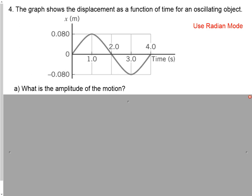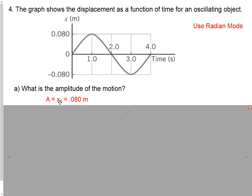We're going to start with an example putting to use some of the things we learned last time. Here we can see an object where its displacement has been graphed as a function of time. Remember, you need your calculator to be in radian mode for this unit. Part A asks: what's the amplitude of the motion? You can get that simply by looking at the graph. This thing is oscillating between positive 0.08 meters and negative 0.08 meters, so the amplitude x0 is 0.080 meters.